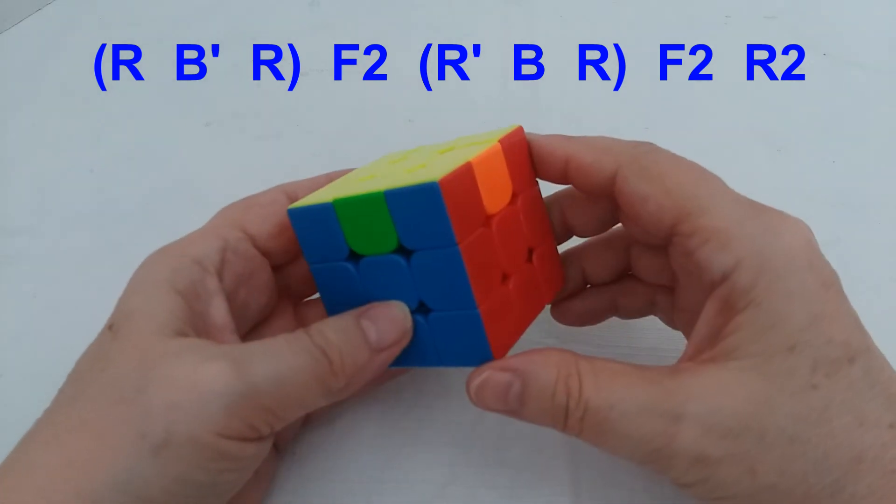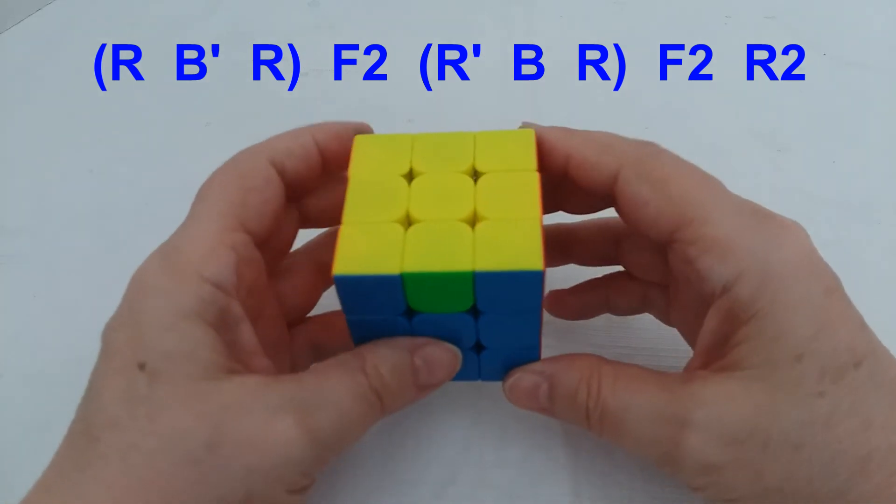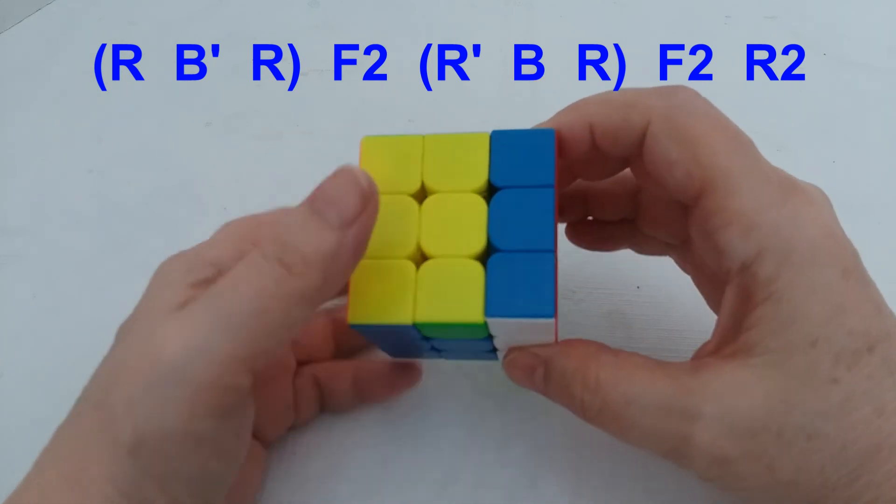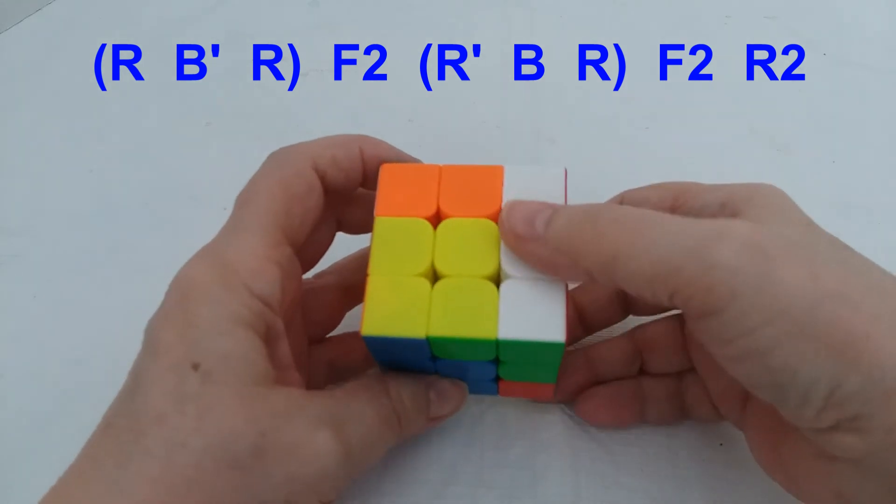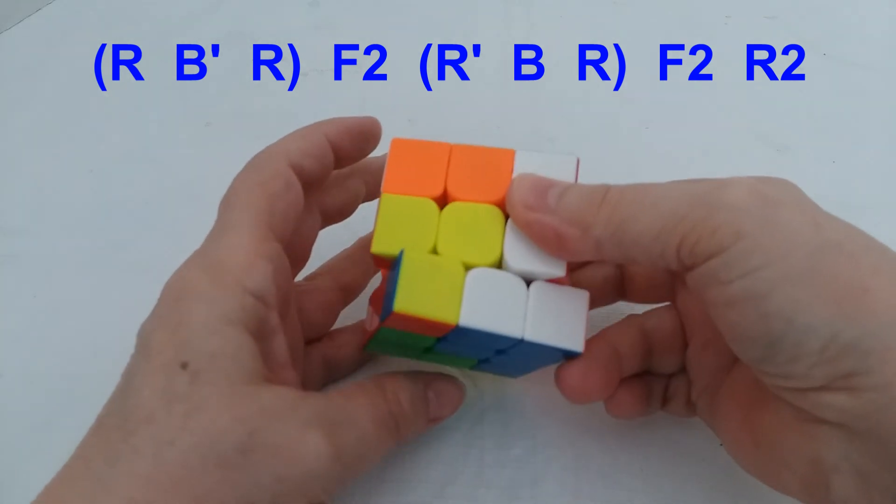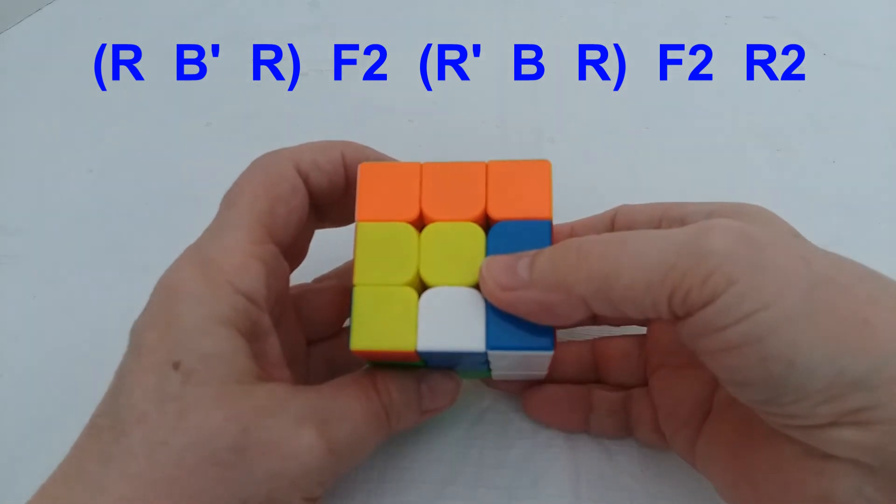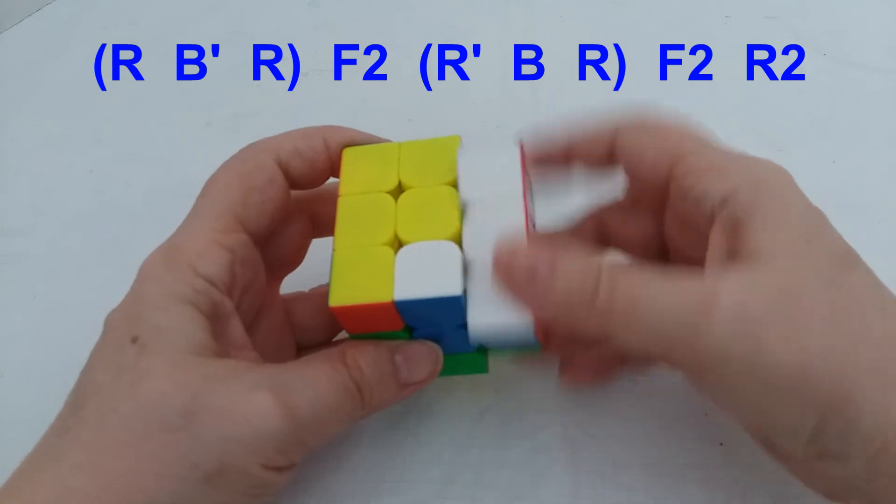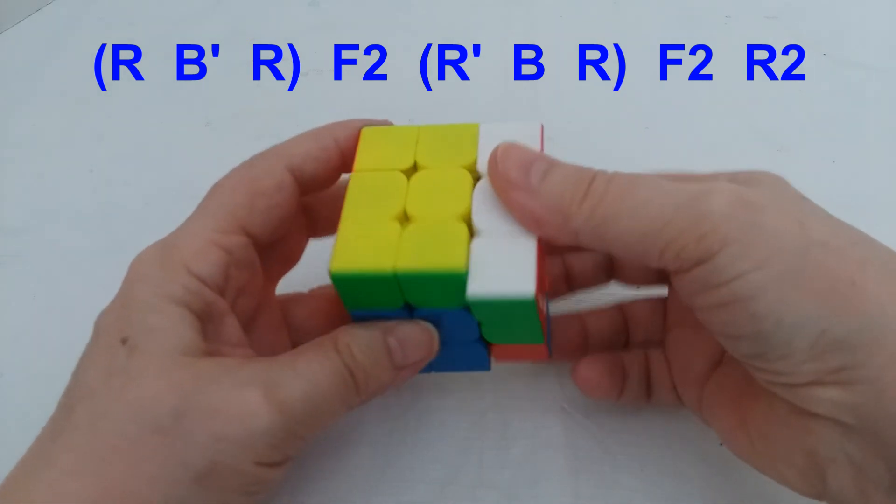So it's that easy. Sometimes in words, the way I think of it, I'll do it again, is I think away, B prime, another away, and then the F2. Then I think back to me, put this back which is just a B, and then this one away again, and then F2 and R2.